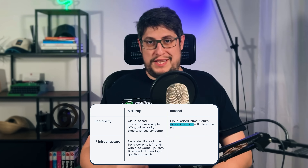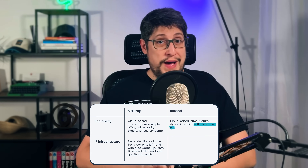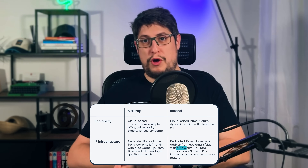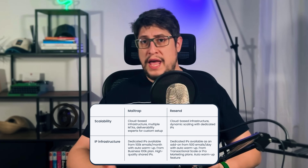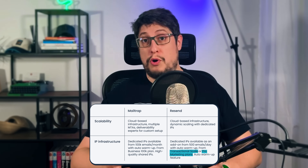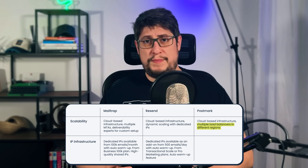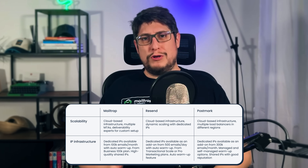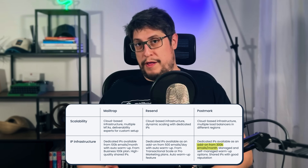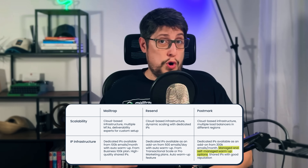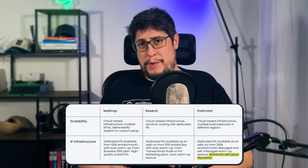Resend takes a dynamic approach for gradual scaling and adds or removes dedicated IPs automatically based on your sending volume and feedback from mailbox providers. Dedicated IPs with auto-warmup are available as an add-on to users who send more than 500 emails per day and use Resend's transactional scale or pro marketing plans. Postmark's infrastructure has multiple load balancers in different regions to maintain high delivery speeds and handle high-volume sending. Postmark also offers a dedicated IP as an add-on for users who send more than 300,000 emails per month. The warm-up process can be managed by Postmark or by the user, and the shared IP pools also have a good reputation maintained through strict controls on bounce and spam complaint rates.